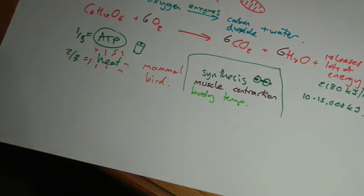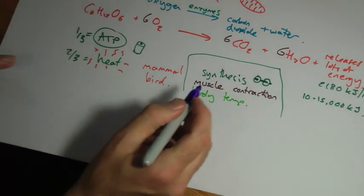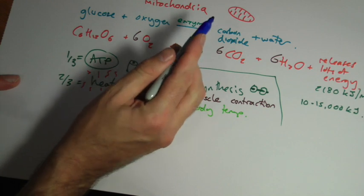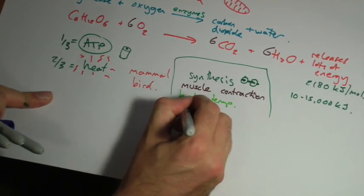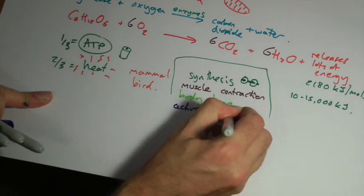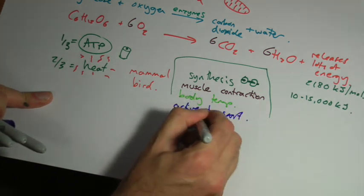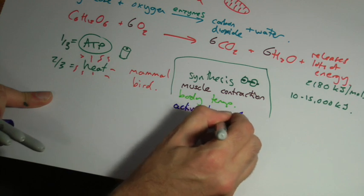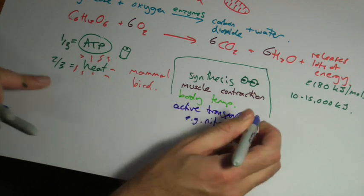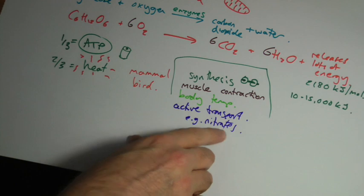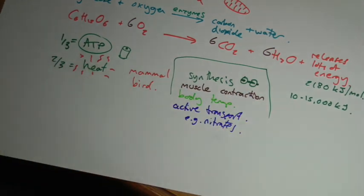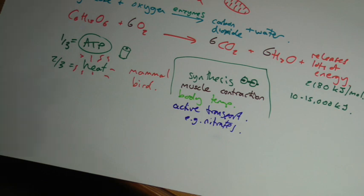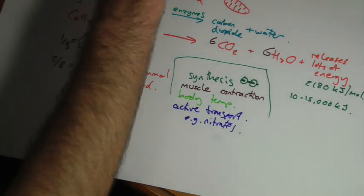And in plants, we always forget plants also have mitochondria in their cells. They will respire aerobically, and they need it for things like active transport. And the example is nitrates. If you remember back in unit one, talking about the root hair cells and the absorbed nitrates using active transport, they pump this stuff in. So that's kind of the overview of aerobic respiration.